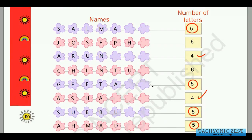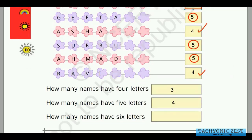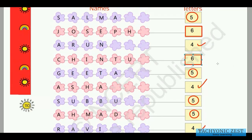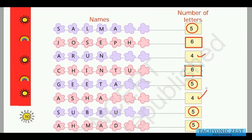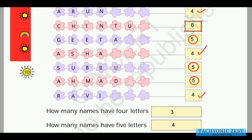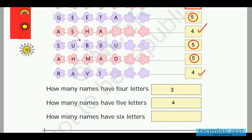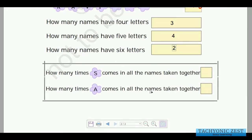Next: how many names have six letters? Let us draw a triangle next to the names with six letters. Joseph has six letters and Chintu has six letters — no more. So the total number of names with six letters is one, two — the answer is 2.